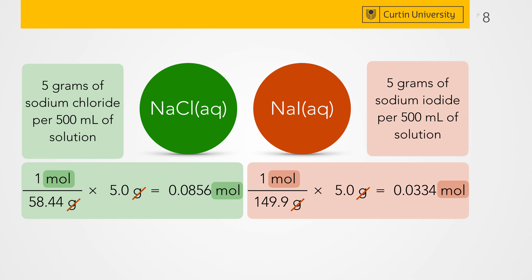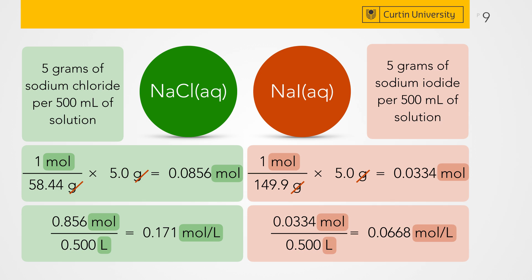First, we need to convert the mass to the number of moles using its molar mass. Note that sodium chloride is 58.44 grams per mole, while sodium iodide is 149.9 grams per mole. Pay attention to the dimensional analysis, which gives us our desired units of moles. When we calculate the molar concentration, we have the number of moles per litre of solution. For these two solutions, they have the mass concentration of 5 grams per 500 mL, but very different molar concentrations. Because the molar mass of sodium chloride is about one third that of sodium iodide, it is three times more concentrated. Note the dimensional analysis highlighting that we get the desired units of moles per litre, and don't forget to apply logic — the three-fold relationship between the molar masses giving a three-fold difference between the concentrations.